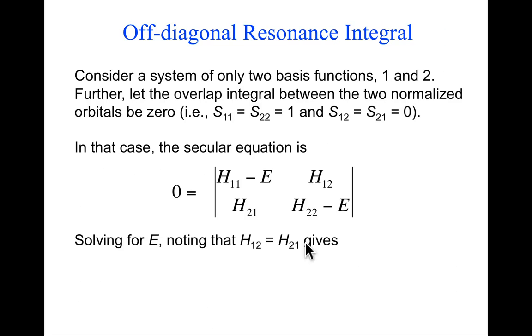The less intuitive resonance integrals are the off-diagonal ones. To provide more insight, let's consider a system with only two basis functions, 1 and 2. To make life easier, let's imagine the overlap integral between the two normalized orbitals φ1 and φ2 is equal to zero. So they're normalized—S11 and S22 equal 1—but the overlap between the two is 0.